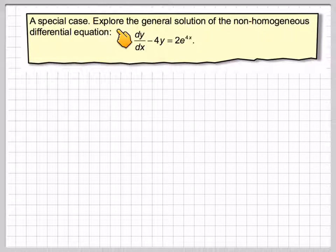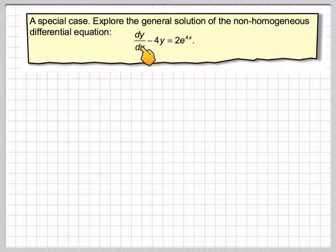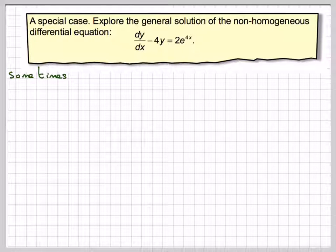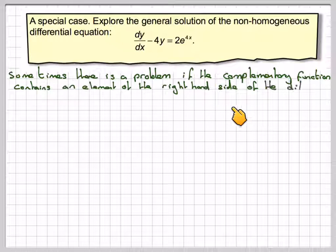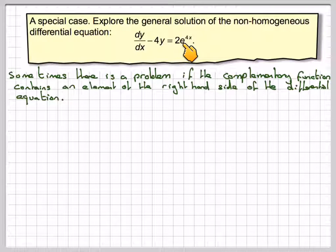Special case. We explore the general solution of the non-homogeneous differential equation dy/dx minus 4y equals 2e to the 4x. Sometimes there's a problem if the complementary function contains an element of the right-hand side of the differential equation — if the complementary function contains a similar format e to the 4x, then there could be a problem. Let's see.